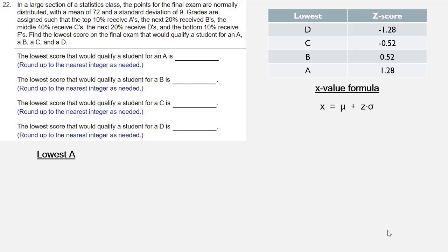We're using that X-value formula, so we'll insert the values that we know. μ is 72, σ is 9, and for the lowest A, the Z-score is 1.28. We multiply and add, and that gives us 83.52.